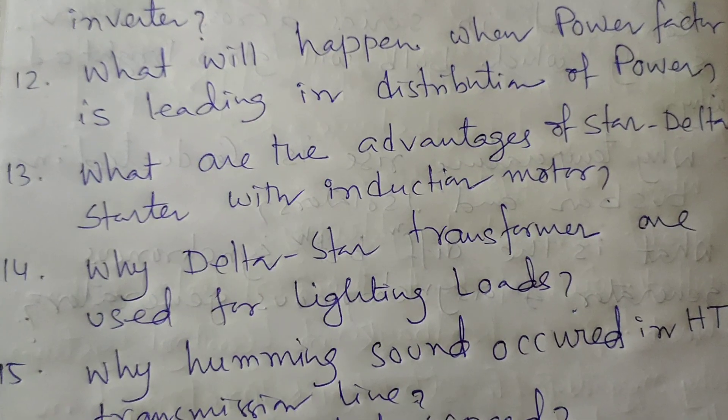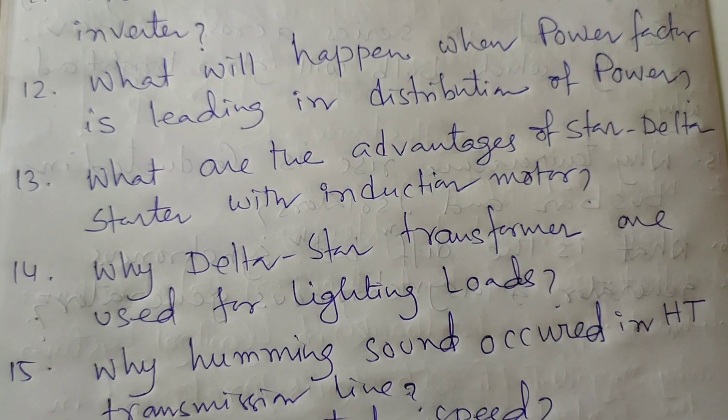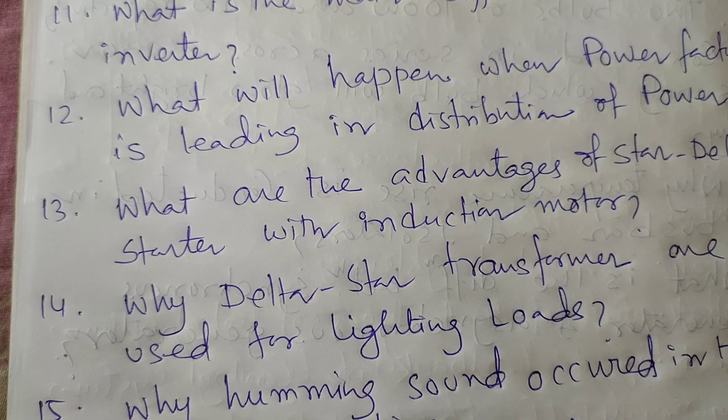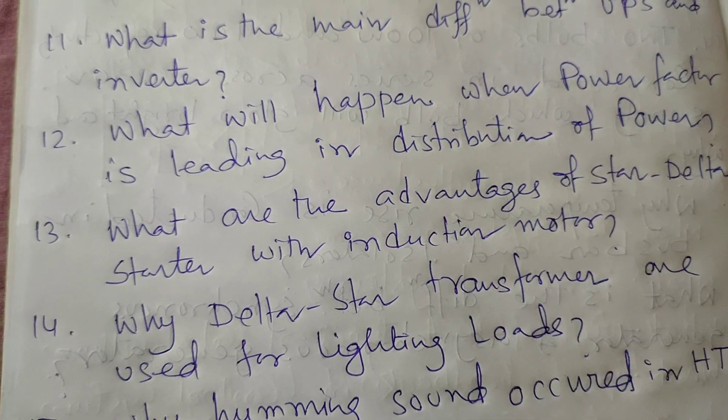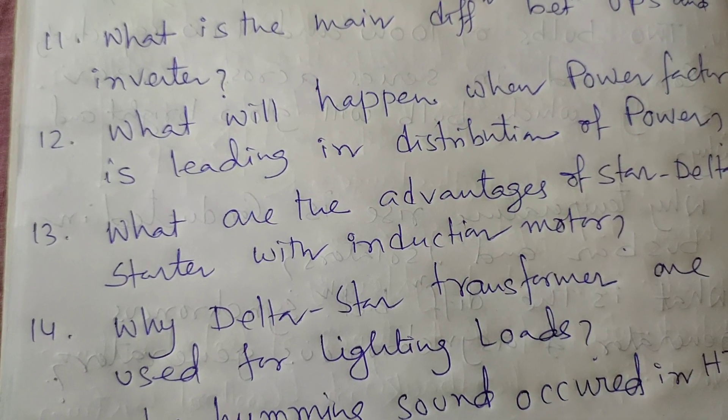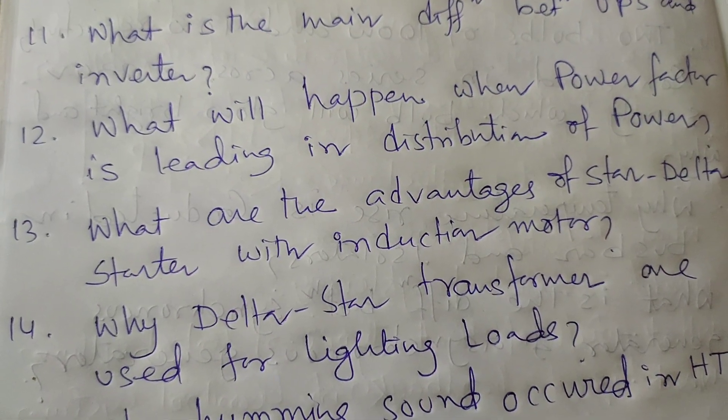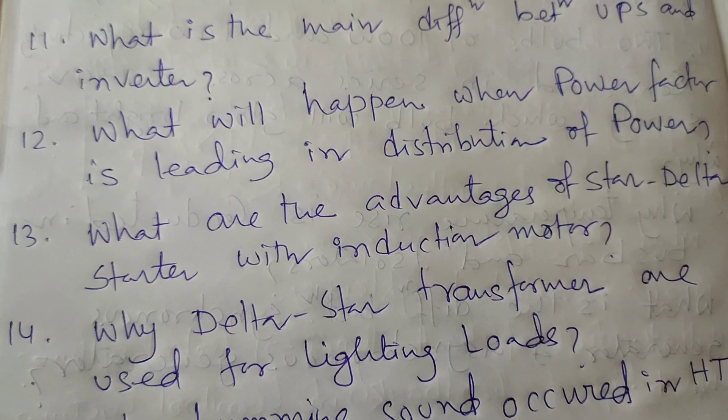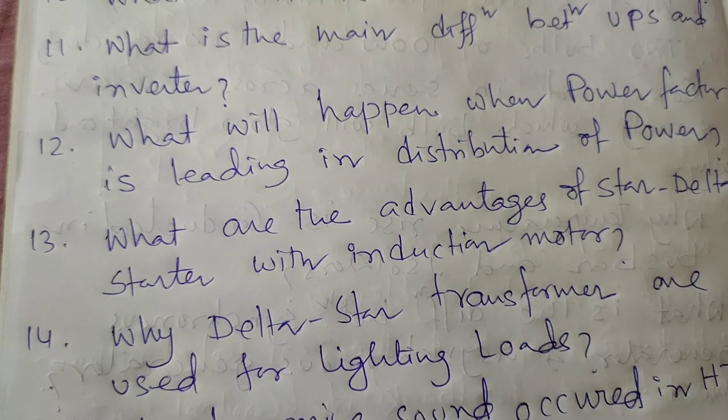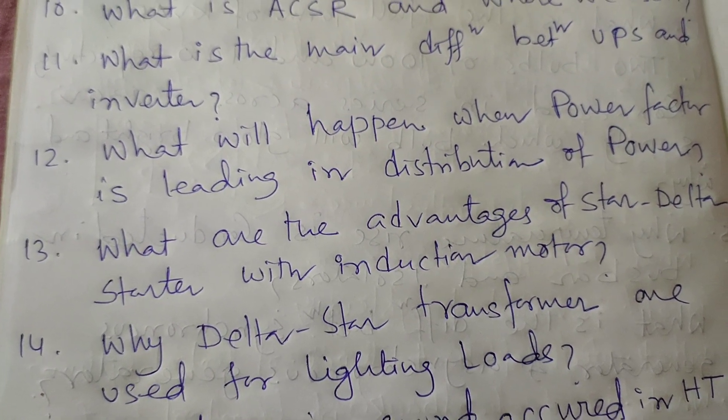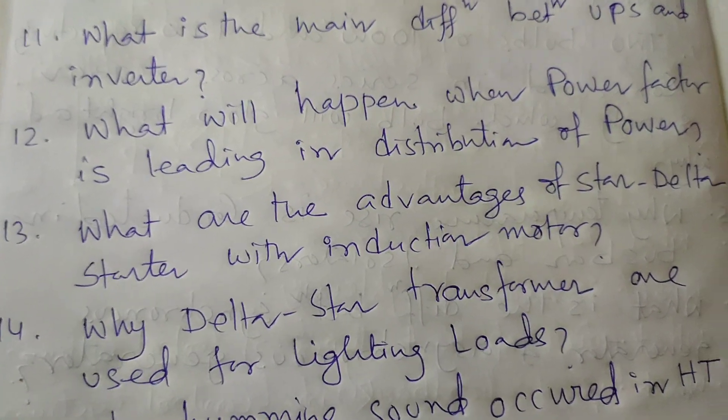Next question: Why are delta-star transformers used for lighting load? For lighting load, neutral conductor is a must, so the secondary must be star winding. This lighting load is always unbalanced in all three phases. To minimize current unbalance in primary, we use delta winding in the primary. So delta-star transformers are used for lighting load.